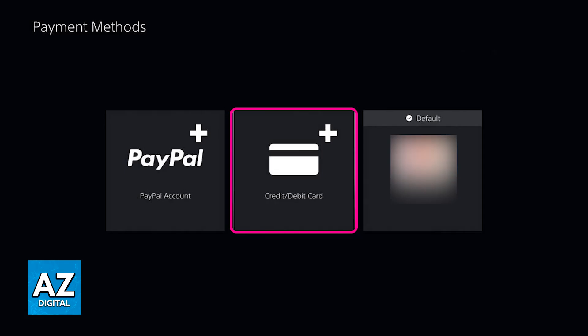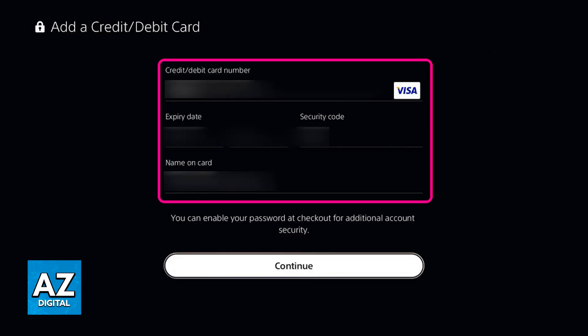Cash App is not going to be available, but you can choose credit or debit card. Once you select credit or debit card as the payment method, you just have to confirm all of the details about the Cash App card. This is going to be the full card number, the expiry date, and the security code.